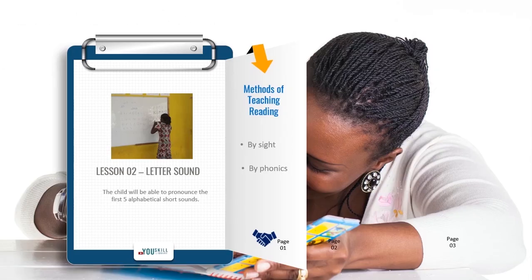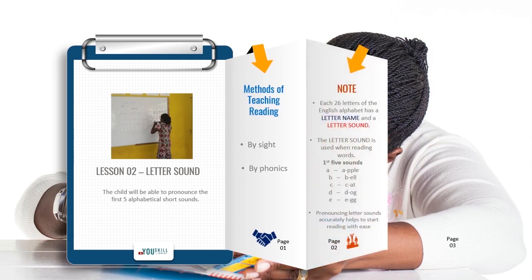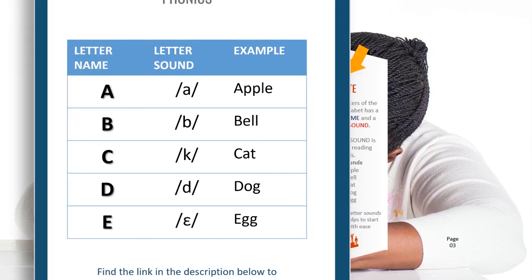We cannot say one method of reading is better than the other. We have to apply both methods in appropriate ways. Each of the 26 letters of the English alphabet has a letter name and a letter sound. We want to place emphasis on the sound in this method of teaching reading. The letter sound is used when reading words, and it is very important for the child to learn the letter-sound relationship when learning how to read. Let's start. These are the sounds for the first five letters of the English alphabet.